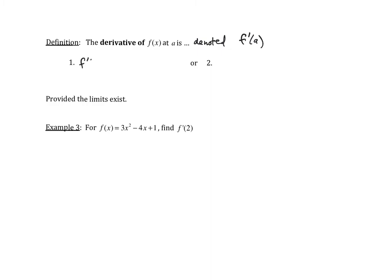f prime of a has two possible definitions. The first is the limit as x approaches a of f of x minus f of a divided by x minus a. The second definition is the limit as h goes to zero of f of a plus h minus f of a all divided by h, provided that the limits actually exist.